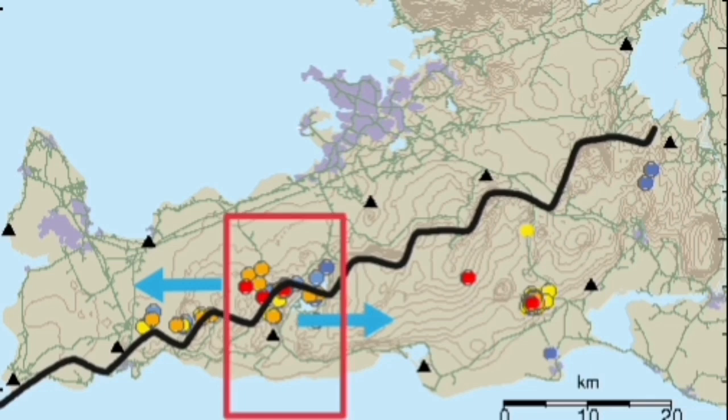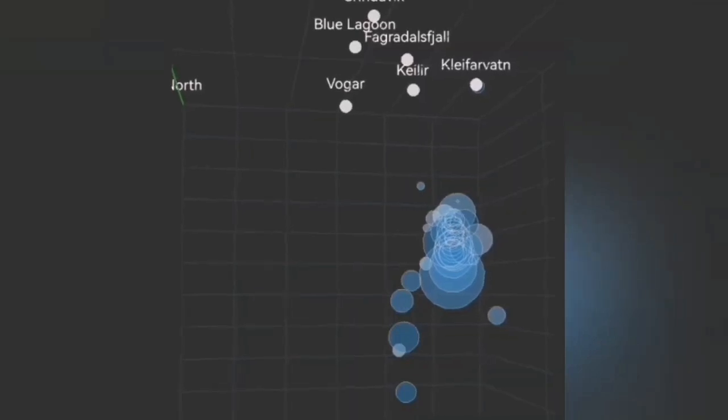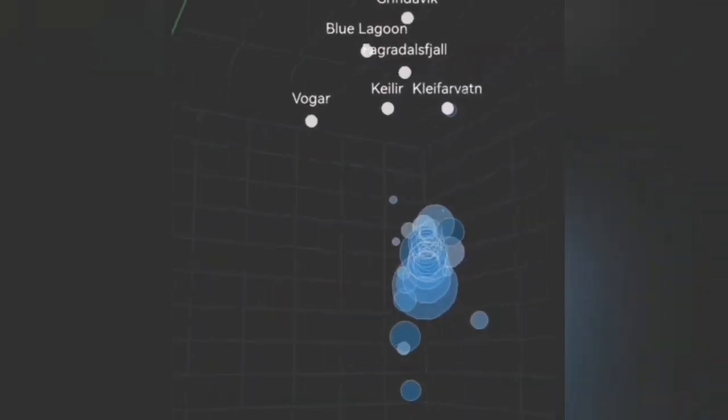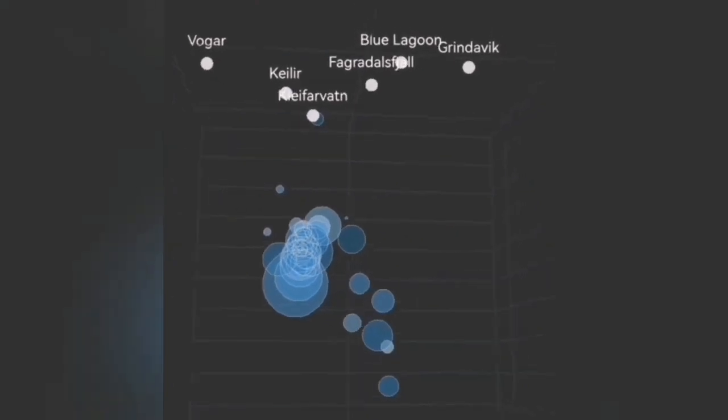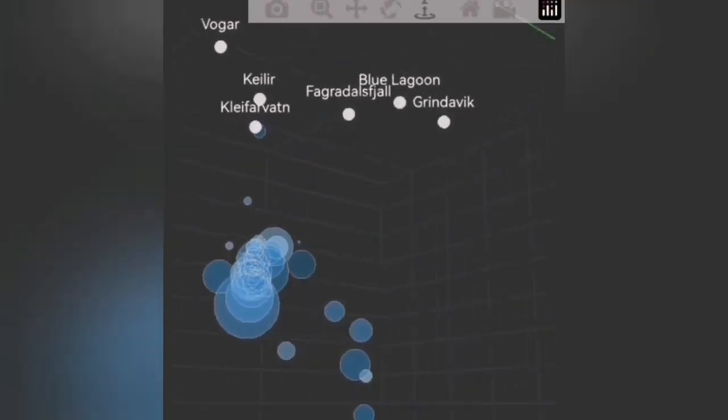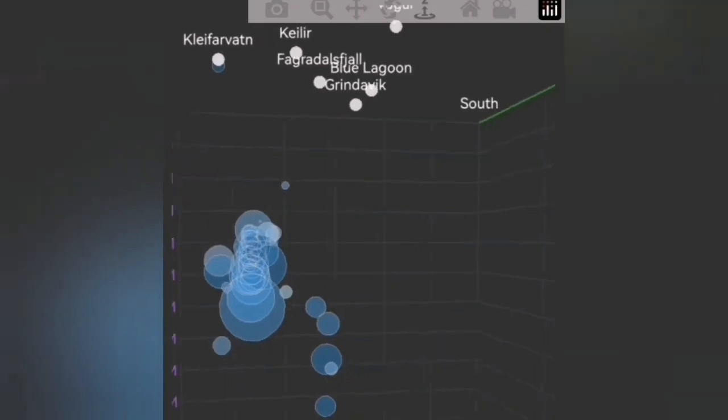The pulling apart of the land in this area creates this extension and transfers the movement to those transform faults. Most of it at the moment is concentrated in the Krýsuvík area, and we can see in the depth model of these earthquakes they're concentrated around the depth of 7 to 5 or 4 kilometers.